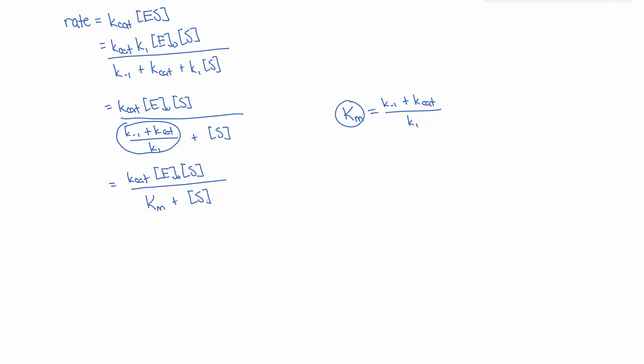Another replacement that biochemists make is defining the maximum rate, called Vmax, which is equal to Kcat times the concentration of E0. What this represents is the maximum rate at which product could be produced if every single enzyme was bound with substrate. The concentration of E0 represents all of the enzyme being used, and Kcat is the rate constant for the step that produces the product — so that represents the maximum rate. I'm going to replace Kcat·E0 with Vmax.